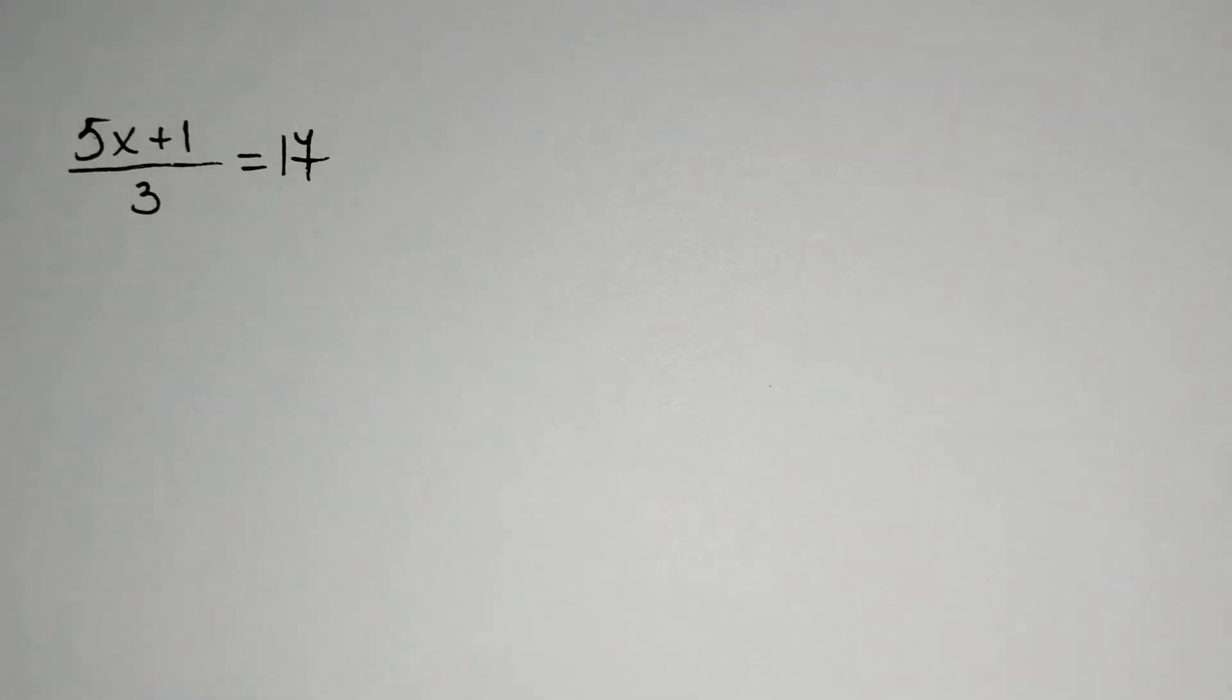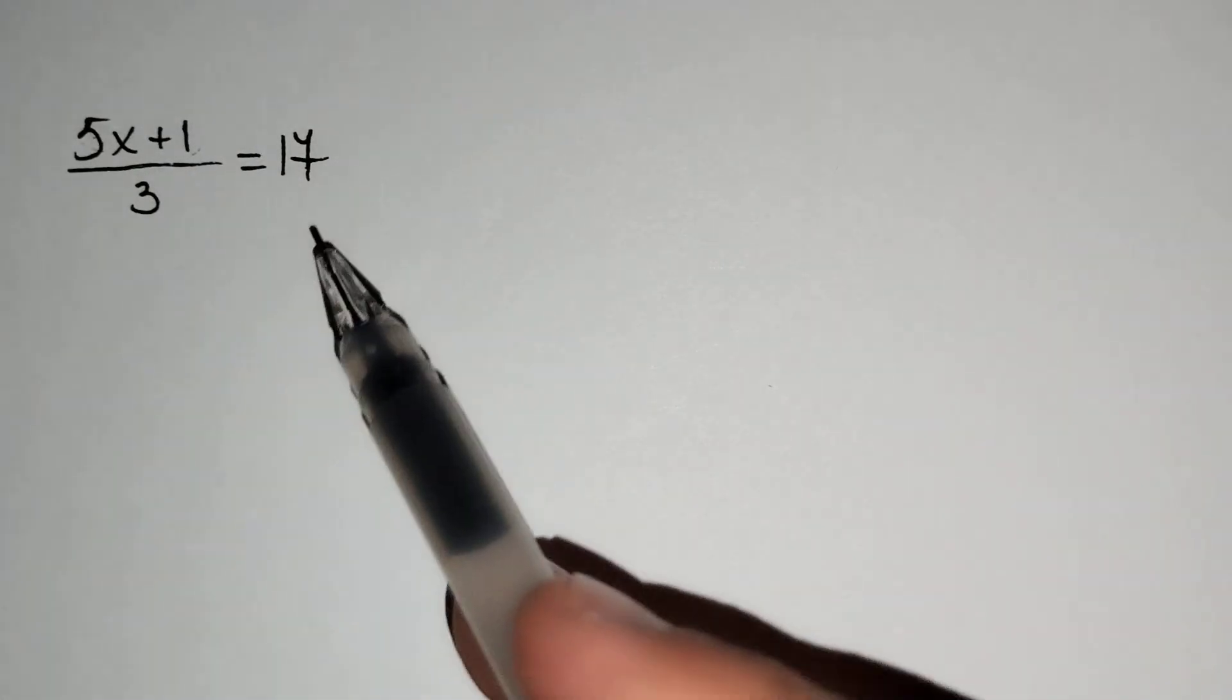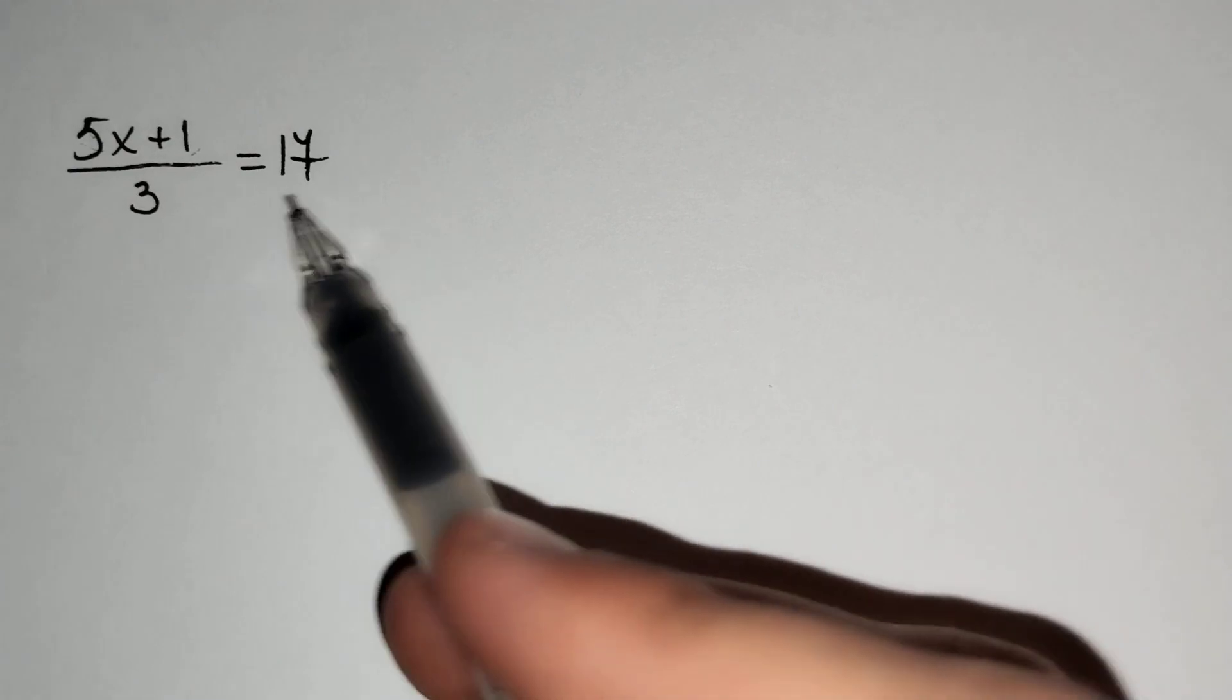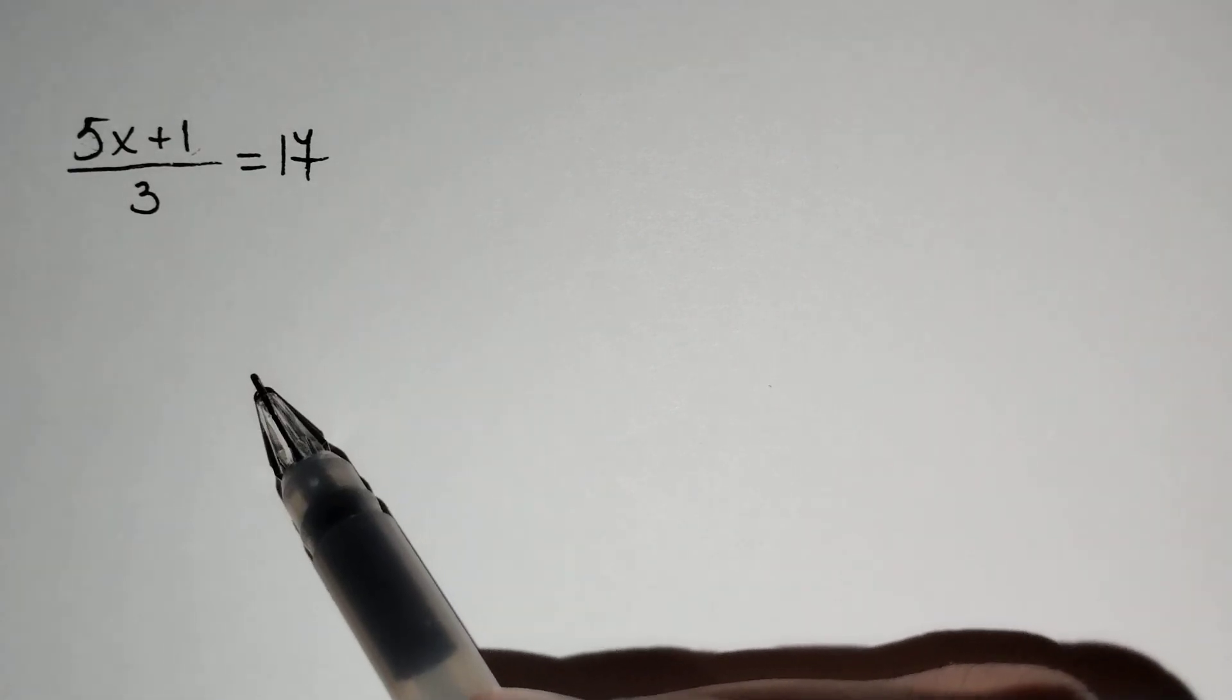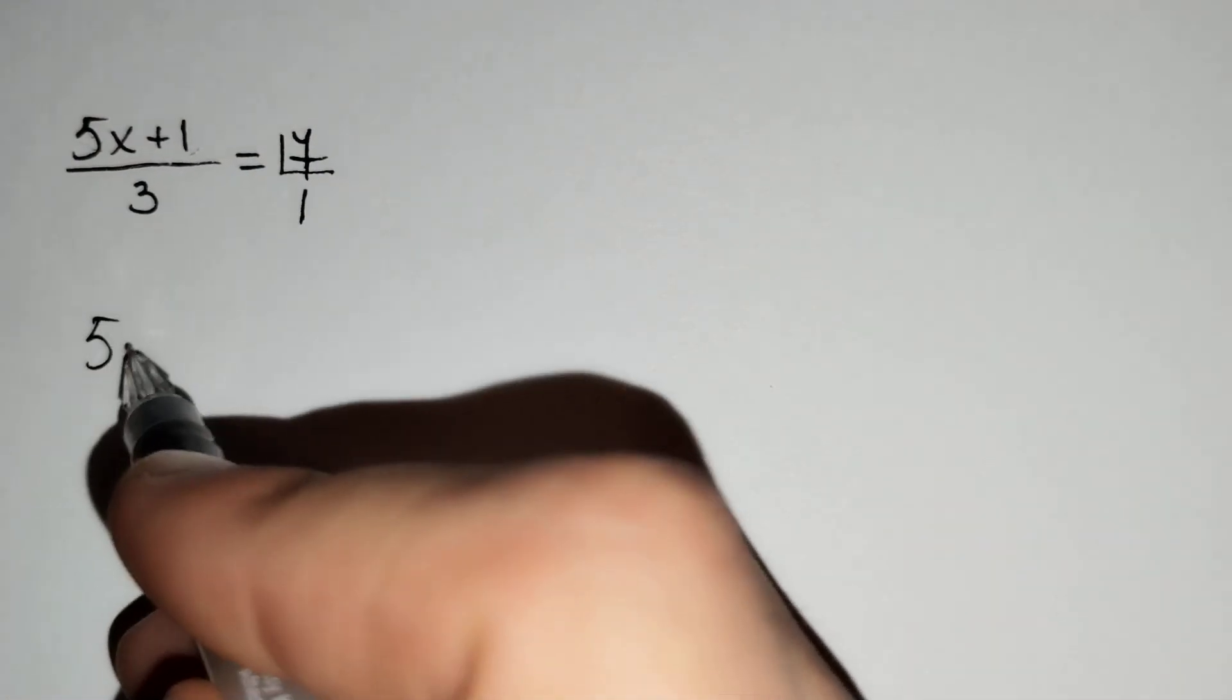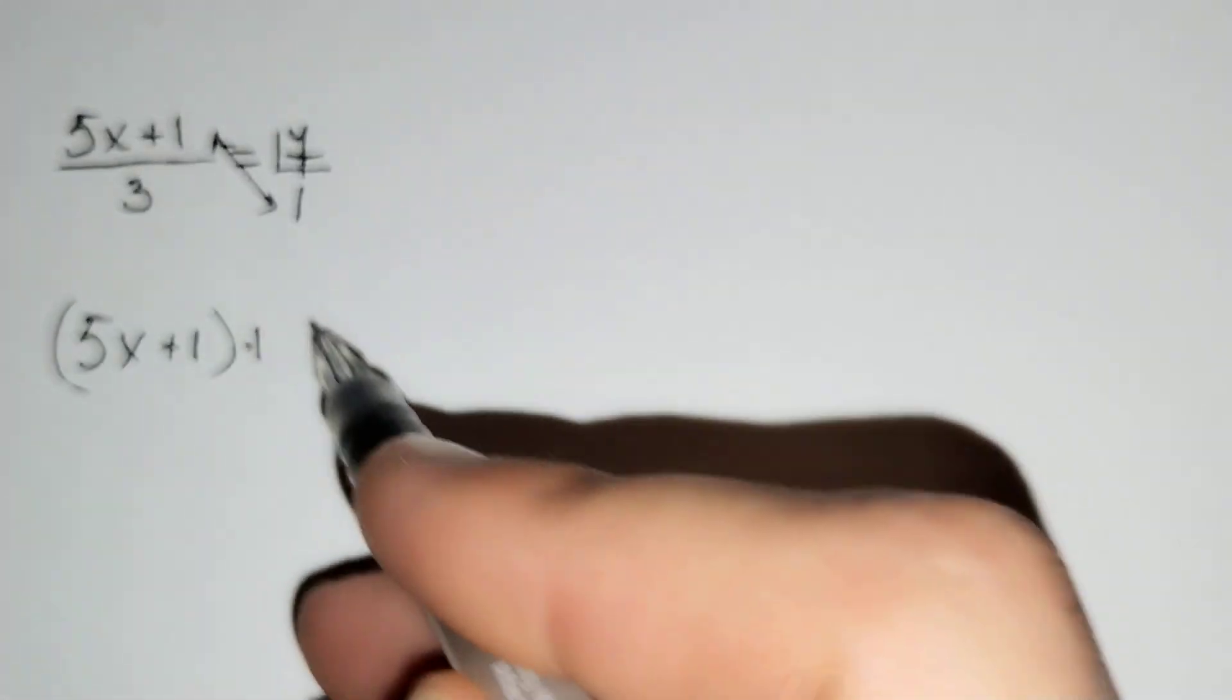This is a proportion. We multiply the denominator of the first fraction by the numerator of the second. Nothing is written in the denominator of the second fraction, so its denominator equals 1. Now, (5x+1) × 1 = 3 × 17.